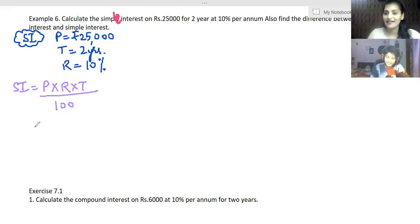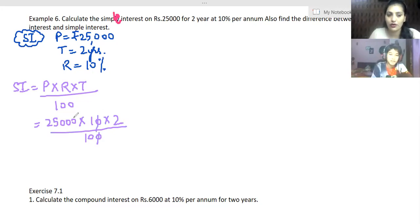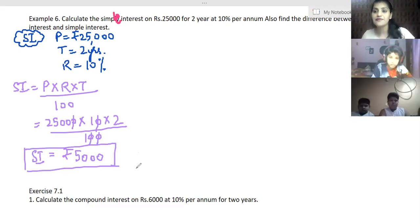So we'll substitute the values. Against P we are going to write 25,000 into 10 into 2 over 100. Right, so one zero goes here, one zero goes here, so it will be rupees 5,000. Right, as the simple interest. So we have the first part of the question calculated.